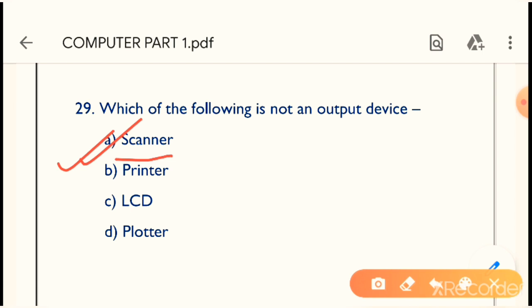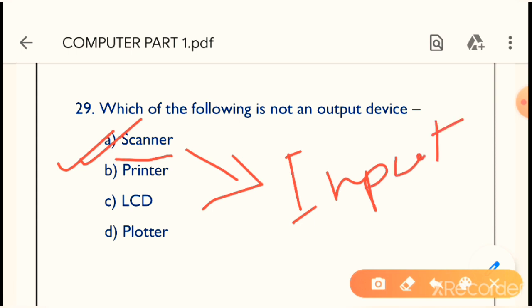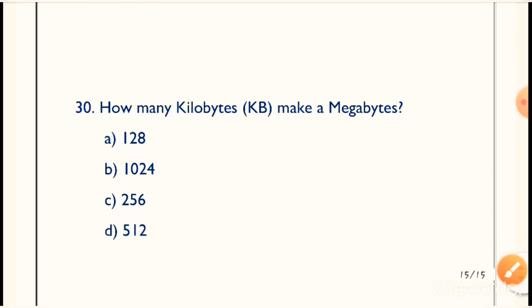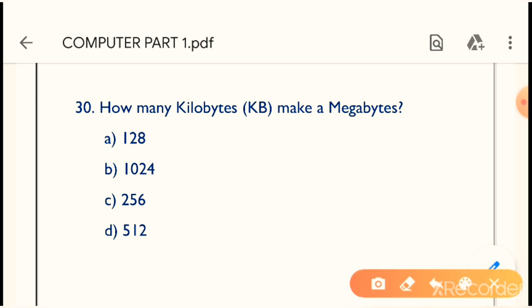Question 29: Which of the following is not an output device? Scanner is the answer — scanner is an input device. Remember it: scanner is an input device, it is not an output device.